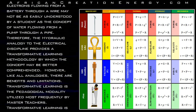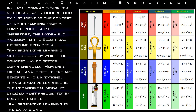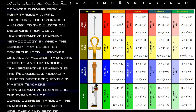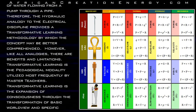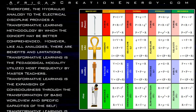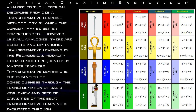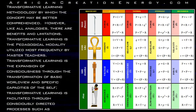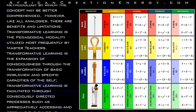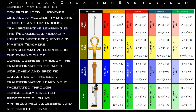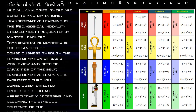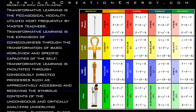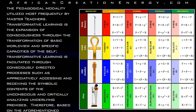The relationship between power, current, and voltage — known as Ohm's Law in the electrical discipline — to the relationship between power, temperature, and heat flow — known as Fourier's Law in thermodynamics — to the relationship between power, pressure, and fluid flow — known as Poiseuille's Law in hydraulics and fluid mechanics — to the relationship between power, force, and velocity — known as the dashpot in the mechanical discipline — regularly serve as a form of transformative learning pedagogy for science and engineering professors. For example, the concept of electrons flowing from a battery through a wire may not be as easily understood as water flowing from a pump through a pipe. Therefore, the hydraulic analogy to the electrical discipline provides a transformative learning methodology by which concepts may be better comprehended. However, like all analogies, there are benefits and limitations.